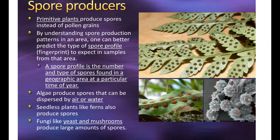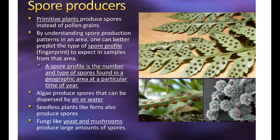Some types of plants don't produce pollen — instead they produce spores. We consider these primitive plants because they haven't evolved to the point of making pollen grains. Spore production in forensics works very similarly to pollen. Just like a pollen fingerprint, we can create a spore profile or spore fingerprint by gathering all the different kinds of spores in an area, separating them by type, and counting how many of each kind we find in that geographic area.